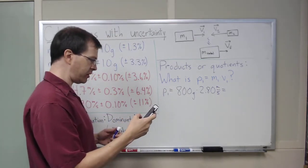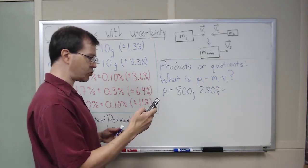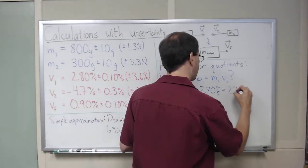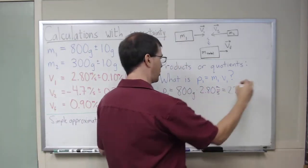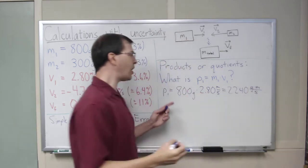I will use my phone. I get 800 grams times 2.80, I get 2240. My units are gram meters per second. There we go, that's my momentum.